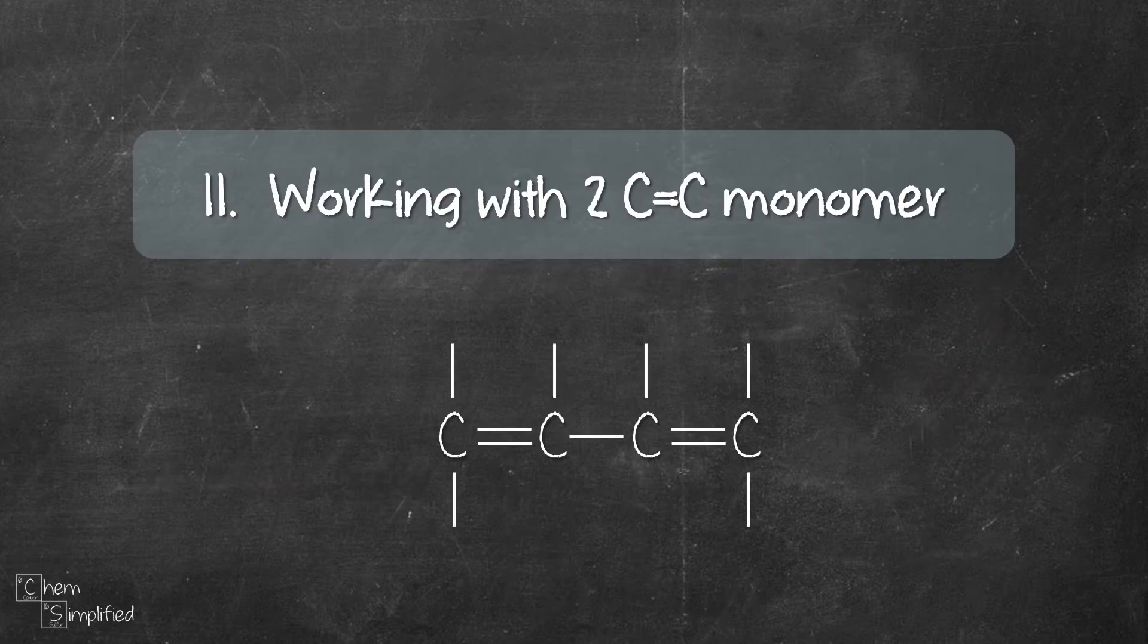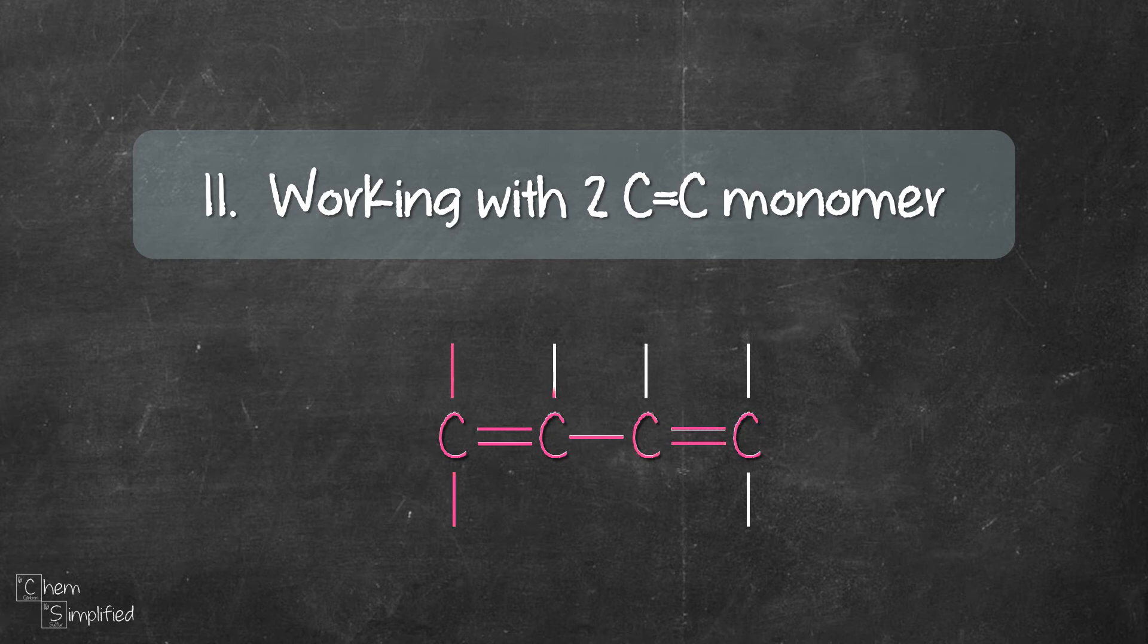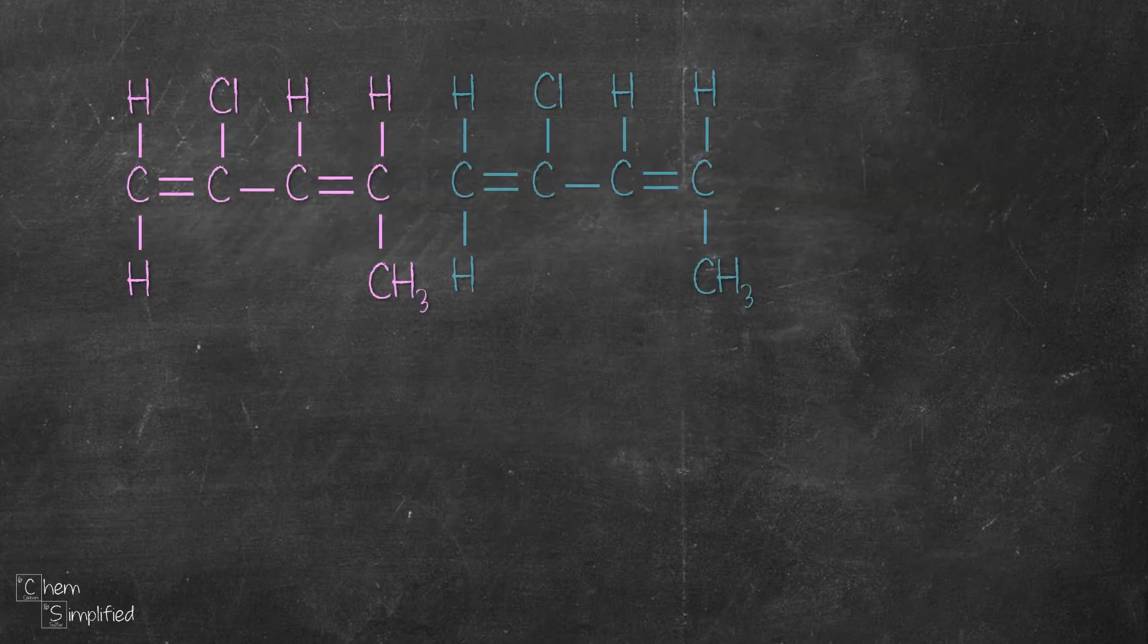Now let's move on to working with monomer with two C=C double bonds. Notice how it's a little bit different? We now have an alkene with four carbons instead of two. And we have alternating double, single and double bond. We know carbon can make four bonds, so after drawing out the double, single, double bonds, you can fill out the remaining bonds by placing it pointing up and down. Remember to keep the bonds pointing up and down and out of the way. No bonds on the right and the left.